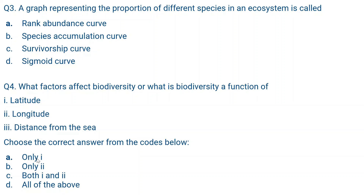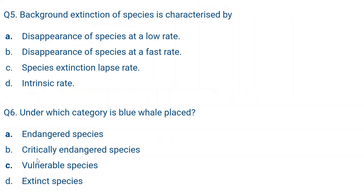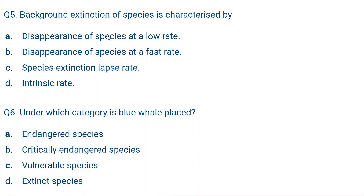Question number five. Background extinction of species is characterized by what? Background extinction of species is the slow extinction of species due to climate change, loss of habitat, or other ecological factors. Because background extinction is a slow process, the correct answer is A — disappearance of species at a low rate.